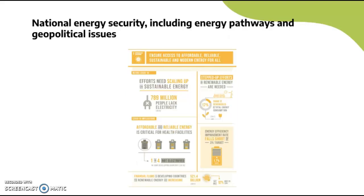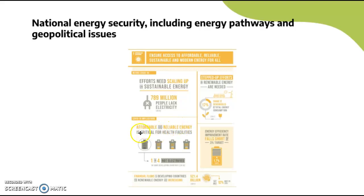National energy security including energy pathways and geopolitical issues — SDG Goal 7: Affordable and Clean Energy — to ensure access to affordable, reliable, sustainable, and modern energy for all. 789 million people still lack electricity. COVID-19 implications include that affordable and reliable energy is critical for health facilities, with one in four not electrified. Financial flows to developing countries for renewable energy are increasing, but stepped-up efforts are still needed.